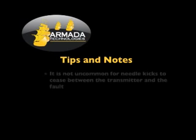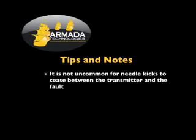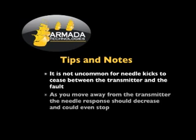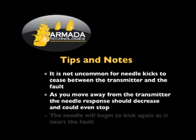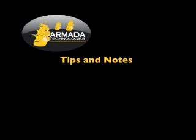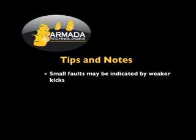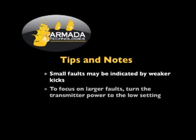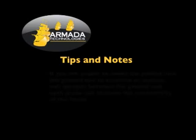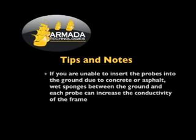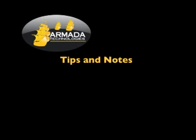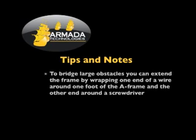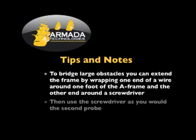It is not uncommon for needle kicks to cease between the transmitter and the fault. As you move away from the transmitter, the needle response should decrease and could eventually stop. The needle will begin to kick again as it nears the fault. Small faults may be indicated by weaker kicks. To focus on larger faults, turn the transmitter power to the low setting. If you are unable to insert the probes into the ground due to concrete or asphalt, wet sponges between the ground and each probe can increase the conductivity of the frame. To bridge large obstacles, you can extend the frame by wrapping one end of wire around one foot of the A-frame and the other end around the screwdriver. Then use the screwdriver as you would the second probe.